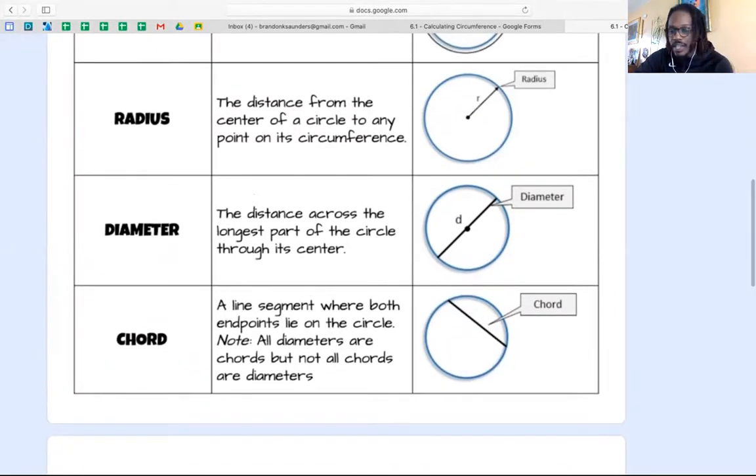And then a chord is a line segment that doesn't cut a circle in half, it doesn't go through the center, but it does go from one point on the circumference to another point on the circumference.